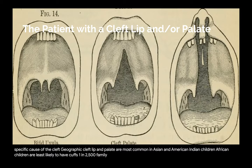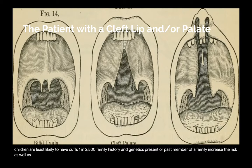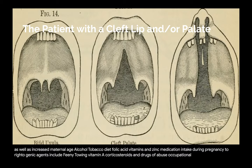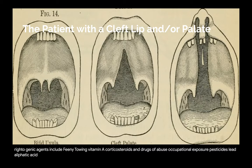Family history and genetics: a present or past family member with a cleft increases risk, as does increased maternal age. Additional risk factors include alcohol, tobacco, diet, folic acid, vitamins, and zinc. Medication intake during pregnancy — teratogenic agents include phenytoin, vitamin A, corticosteroids, and drugs of abuse. Occupational exposure to pesticides, lead, aliphatic acid, and organic solvents is also a risk. Lack of adequate prenatal care and instruction is a risk factor that influences all environmental factors.